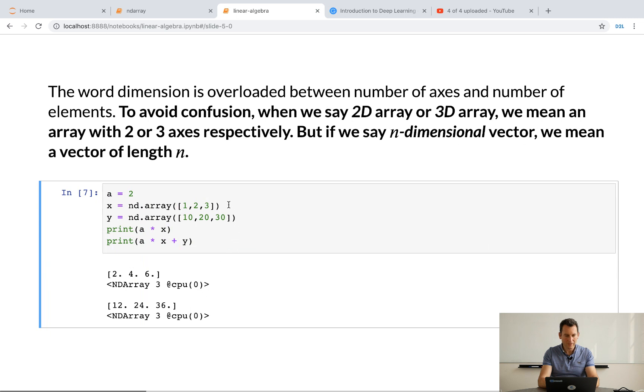Now, the other thing is you can go and multiply things. You can add them together. And by the way, in the future, when we talk about arrays versus dimensions, we say that the arrays have different dimensions if they have different axis. But we just have an n-dimensional vector, then we mean a vector of length n.